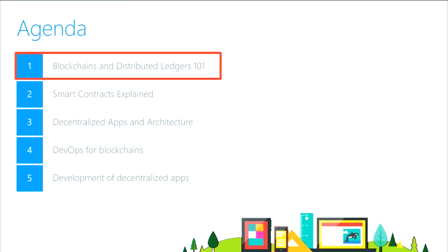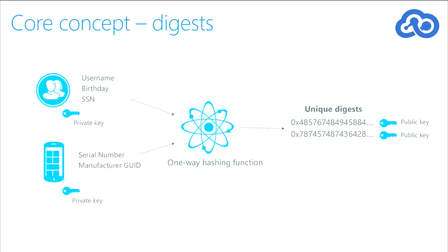From an agenda perspective, we have five modules that we're going to go through here. The first module we're going to talk about some of the core technologies behind blockchain, and that includes distributed ledgers as well as consensus mechanisms that allow these blockchains to actually function in the real world. In order to start thinking about blockchains and how these things actually function, you really have to get down to the core and understand what makes blockchains up — what are the core components?